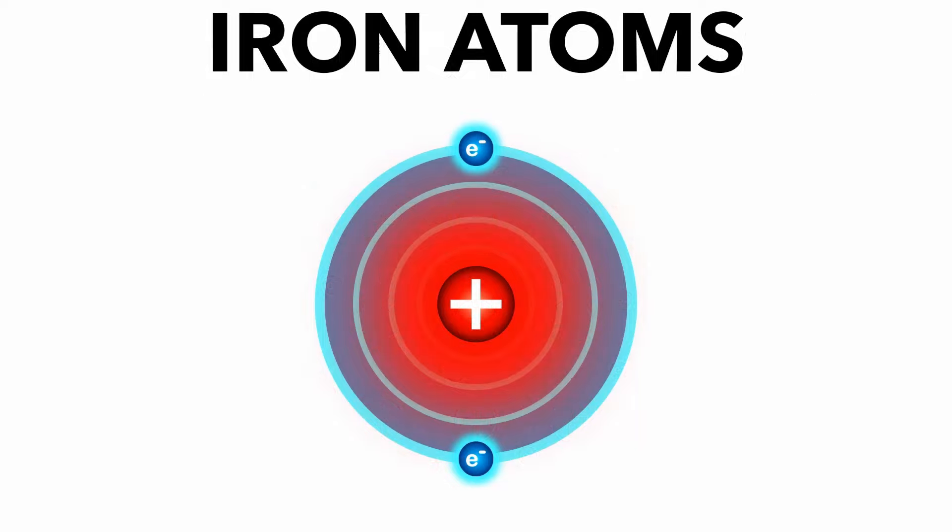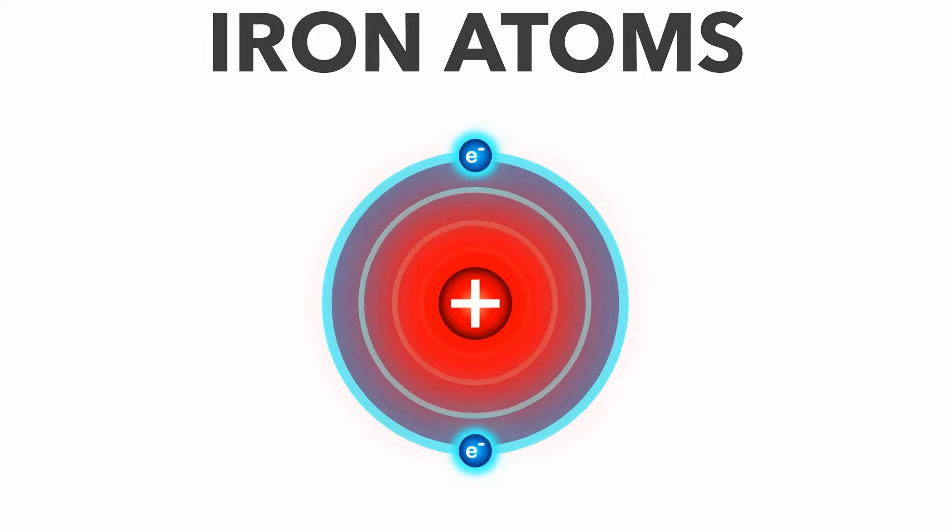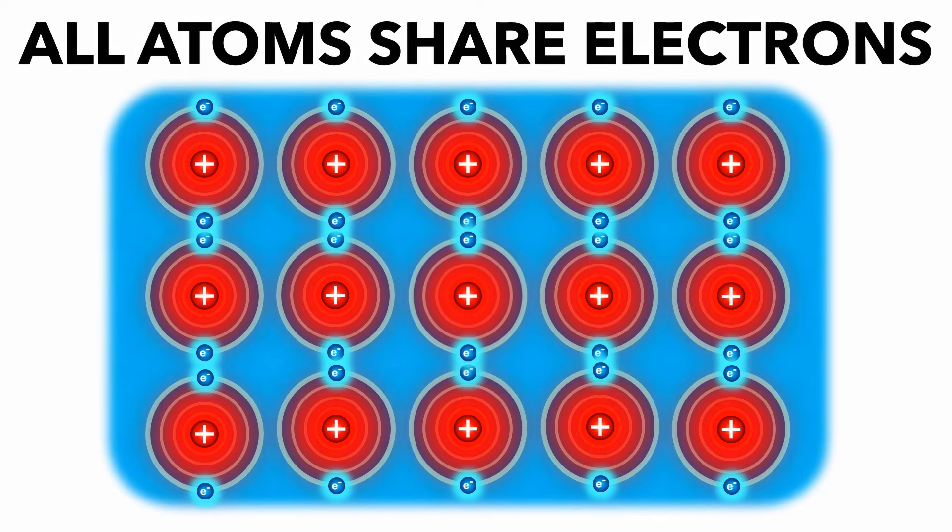we have metallic bonding between metal atoms, such as iron. Iron has two electrons on its outer shell, but metal atoms work as a group and share their electrons between them.